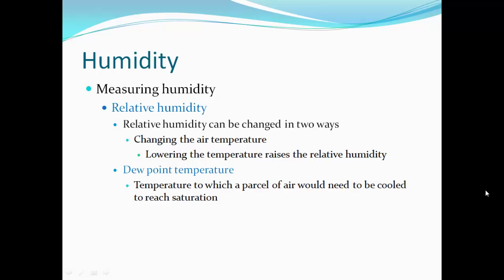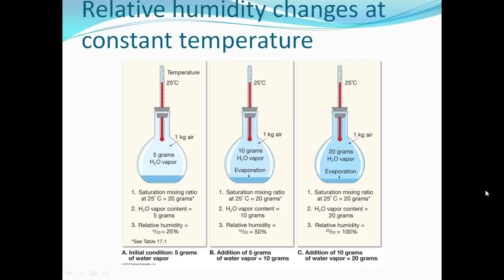We can also change the air temperature. Lowering the temperature raises the relative humidity. We reach dew point temperature — the temperature to which a parcel of air would need to be cooled to reach saturation. If air cools beyond that dew point temperature, the moisture is going to be released in some form of precipitation. For example, at 25 degrees Celsius, with 5 grams of water vapor and a capacity of 20 grams, 5 divided by 20 equals 25% relative humidity.